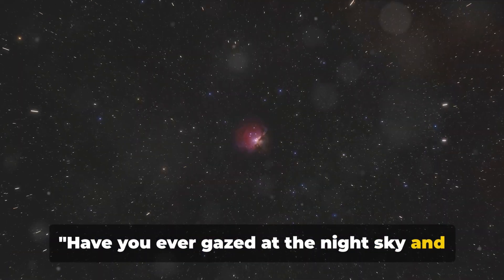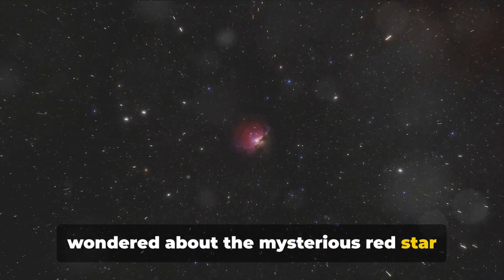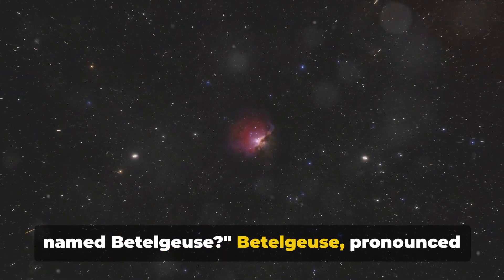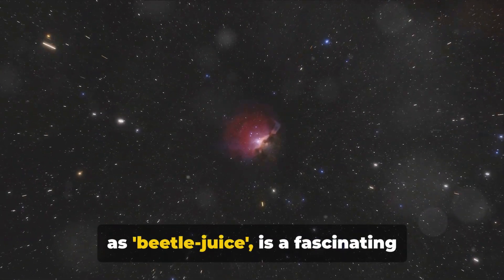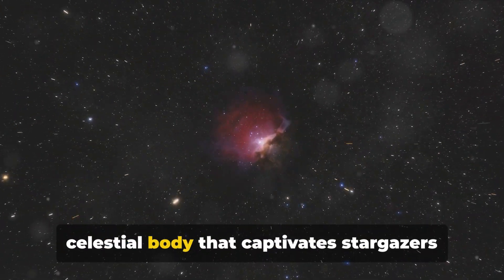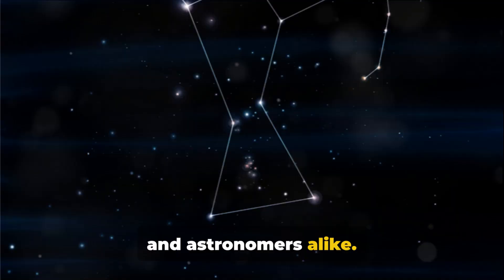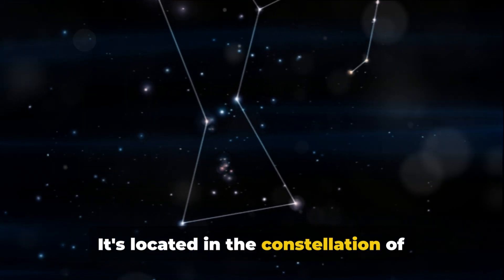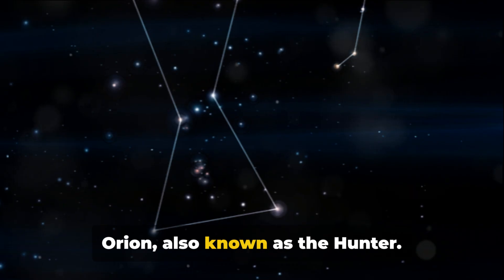Have you ever gazed at the night sky and wondered about the mysterious red star named Betelgeuse? Betelgeuse, pronounced as Betelgeuse, is a fascinating celestial body that captivates stargazers and astronomers alike. It's located in the constellation of Orion, also known as the Hunter.